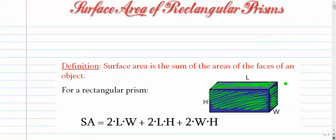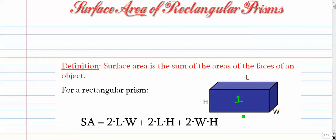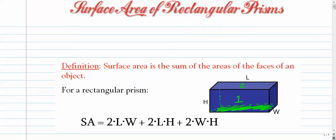For a rectangular prism, there are six faces. The front face — let's call it number one — is the same as the face behind it. Similarly, face number two, the top face, is the same as the face underneath. And the third pair would be the two sides, left and right. That's why we have three groupings of two: length times width times two, length times height times two, and width times height times two.